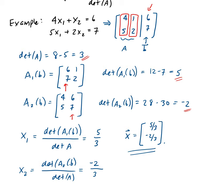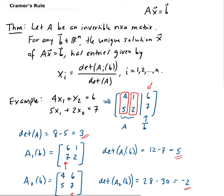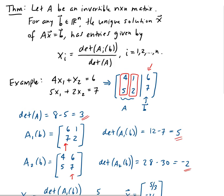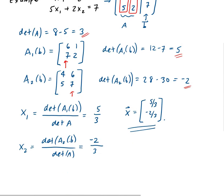Cramer's Rule can be used for any size system, as long as A is an n-by-n matrix. The reason we need an n-by-n matrix is because we're using the determinant. It's a very nice theorem to use. Thank you.